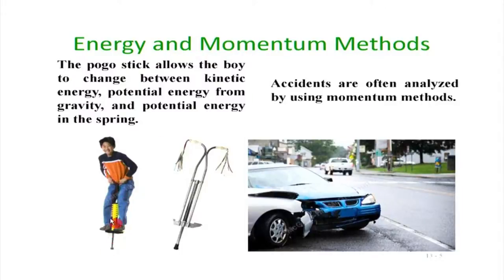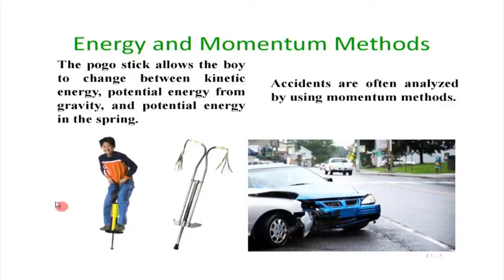A pogo stick is one simple example: if you press on it, potential energy gets stored, and when you release, you jump. You add some potential energy and release it — add, release, add, release. In this case, the potential energy keeps getting converted to kinetic energy and vice versa, and that is how the mechanism keeps hopping.